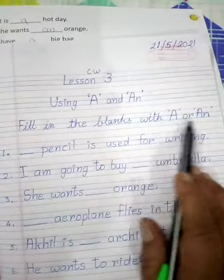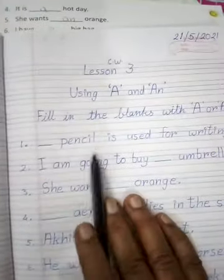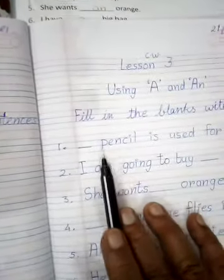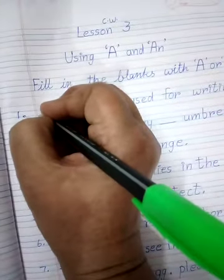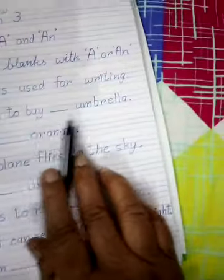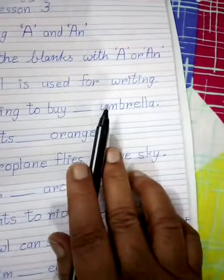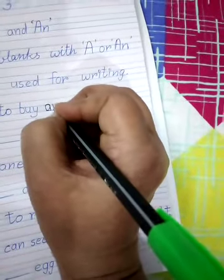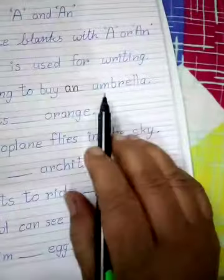A pencil is used for writing. Pencil starts with P, which is a consonant, so we are using 'A'. A pencil is used for writing. I am going to buy an umbrella. Umbrella starts with U, which is a vowel, so we are using 'AN'. An umbrella.